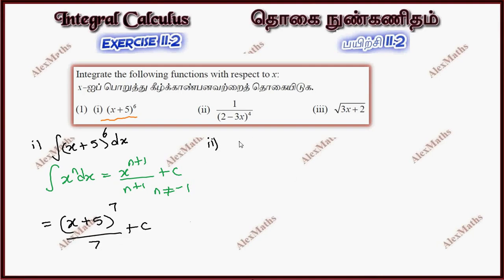Subdivision 2, integration of 1 by 2 minus 3x whole power 4. We can write this as 2 minus 3x whole power minus 4. The x coefficient minus 3 is not equal to 1 by minus 3.